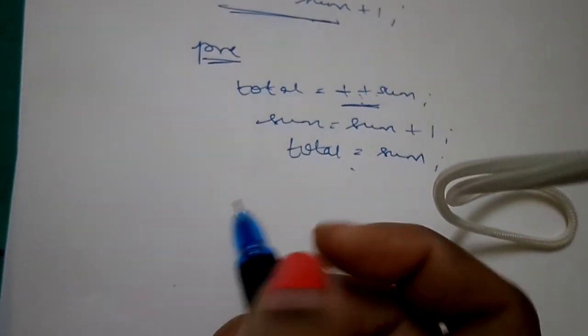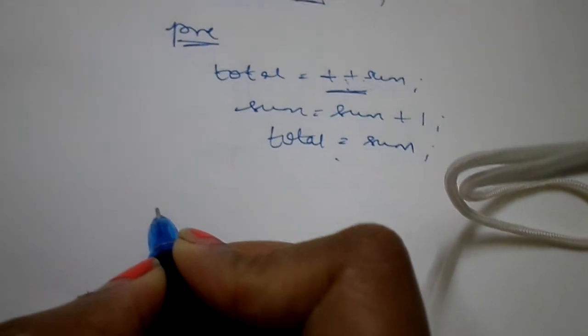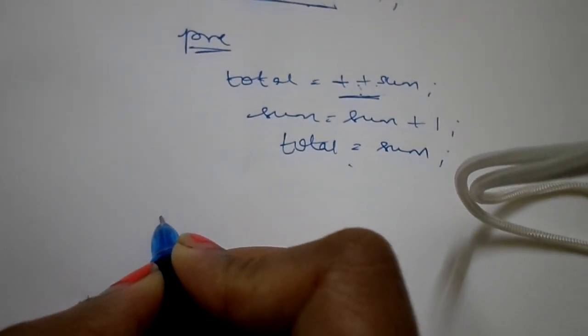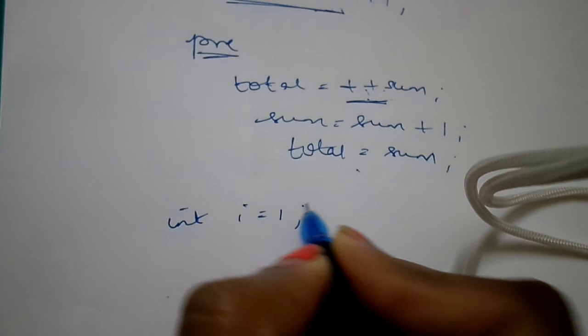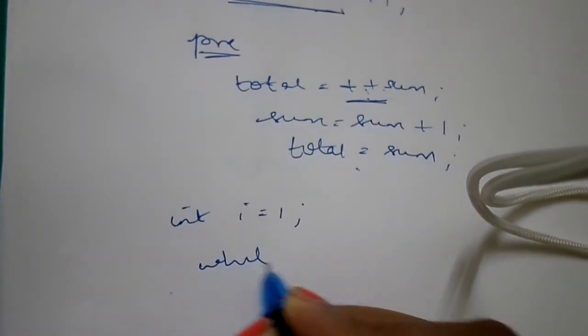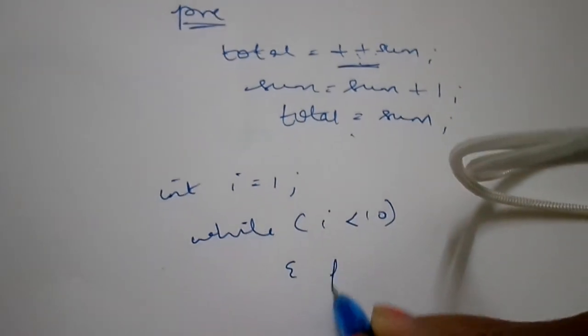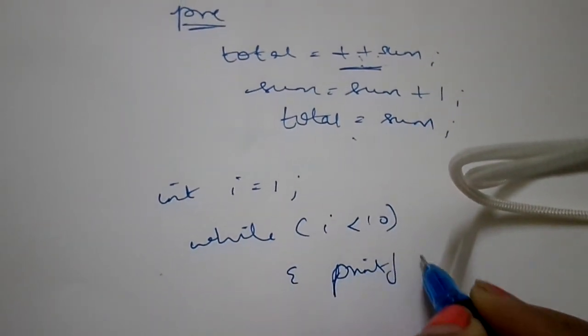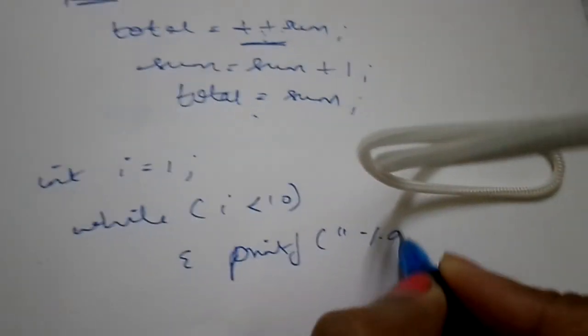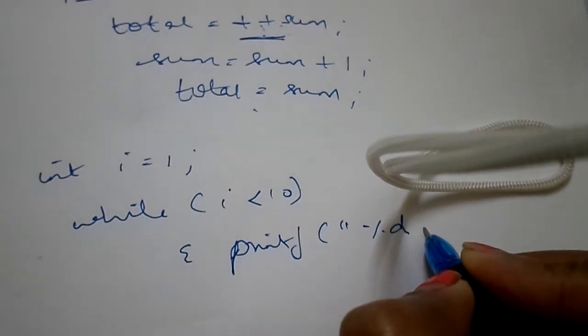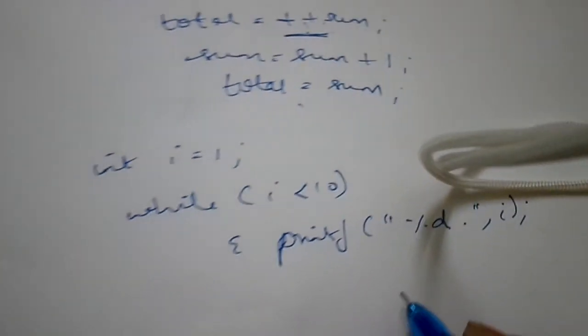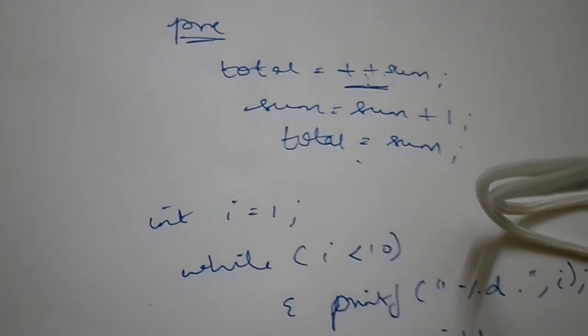Similarly, even decrement goes with the same. Now, for example, let me give you a program: int i = 1; while i is less than 10, printf percentage d comma i.